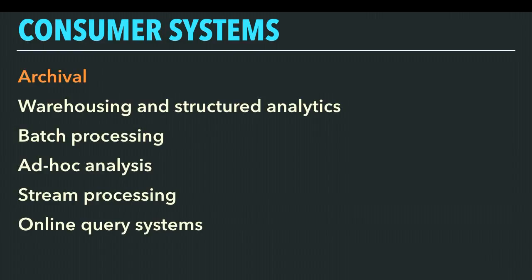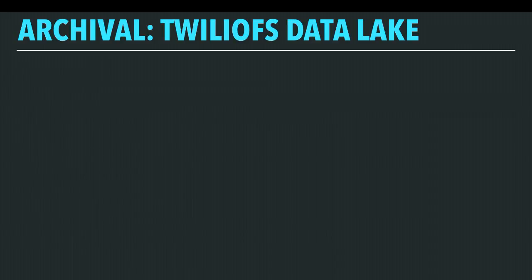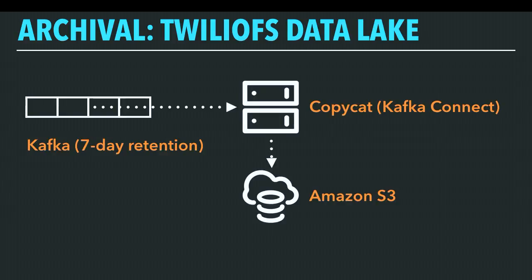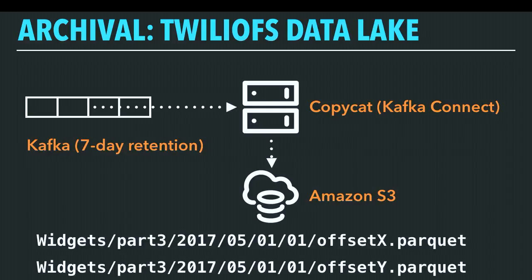I'll start with archival. We call this TwilioFS — a data lake — which describes what happens when you dump everything you collect into one place so you can extract chunks of it for further processing or analysis. We use Amazon S3 and a system we call Copycat. Kafka brokers only retain a fixed amount of time for each topic before they delete data to make room for new data. So Copycat has one job: to copy, byte for byte, entire Kafka topics into Amazon S3. It's a Kafka Connect application — Connect is a framework distributed with Kafka designed for exactly this, consuming from Kafka and writing it somewhere else.